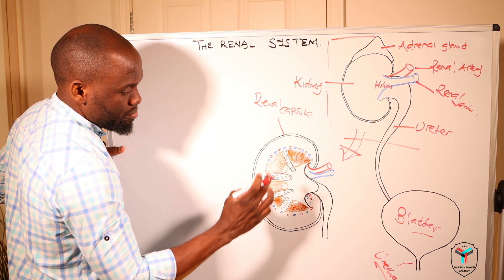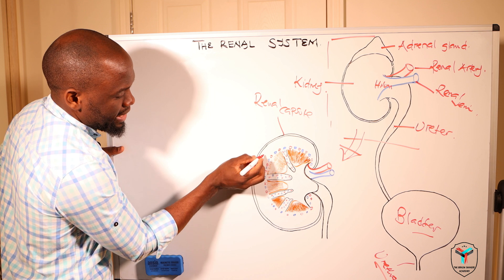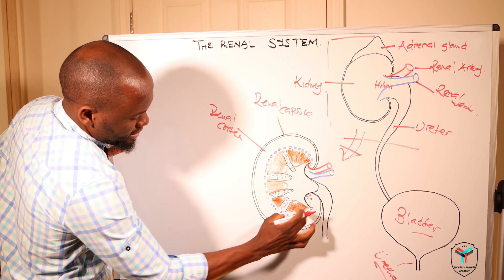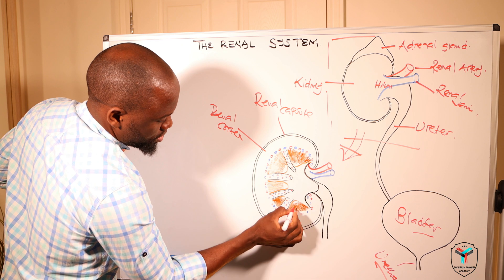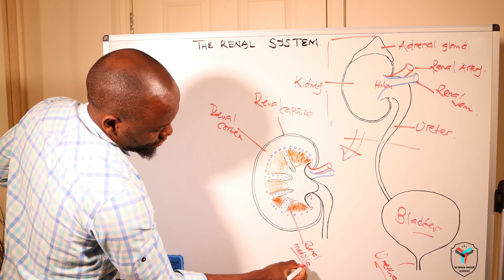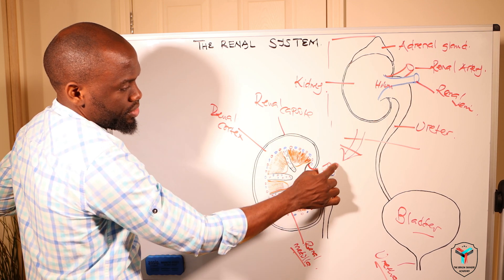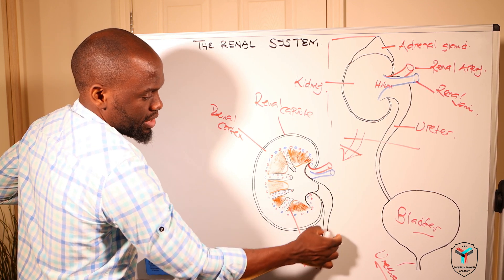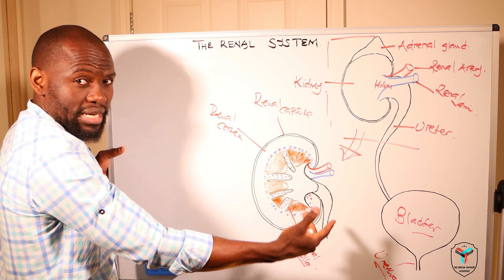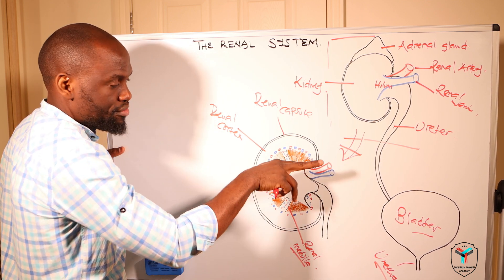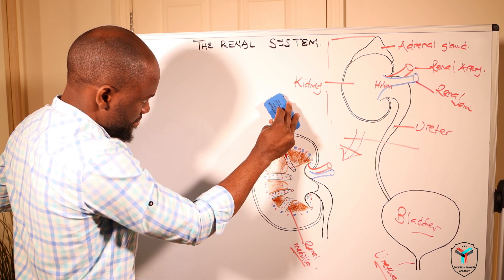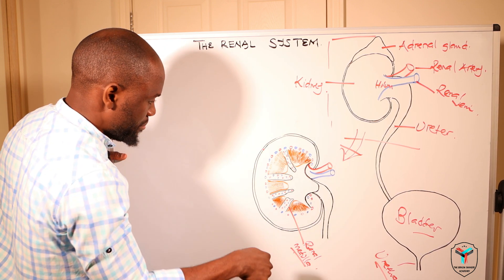The kidney has two important layers. The whiter part is what we call the renal cortex, and the browner part is referred to as the renal medulla. The renal artery and renal vein are present, and the blue and red spots represent vessels coming into and draining from the kidney, taking blood back to the inferior vena cava, which then travels to the right atrium and is pumped to the lungs for oxygenation before reverting back to the kidney.